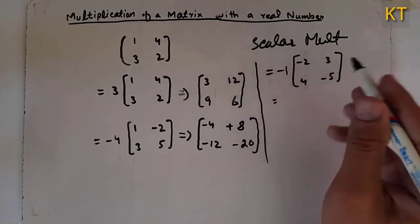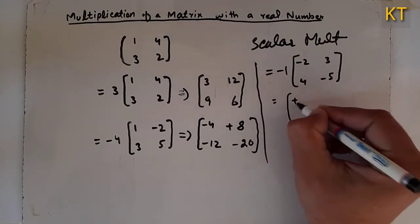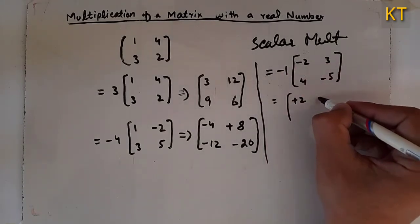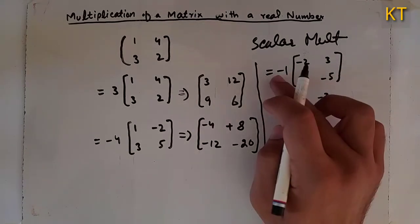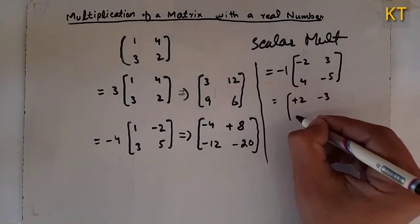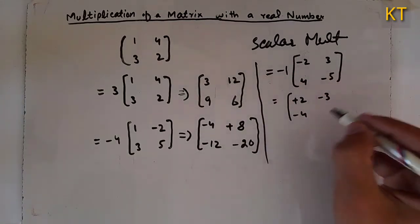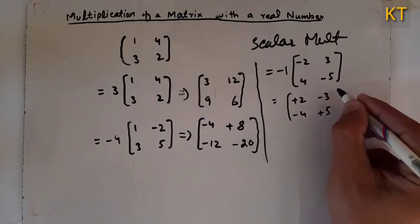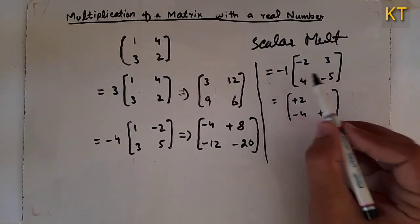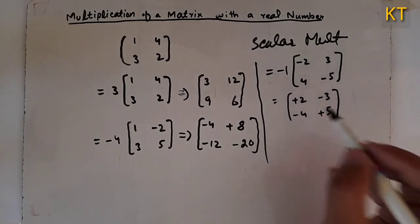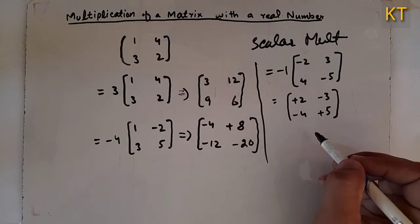Plus two times minus one gives plus three. Multiply to get minus three. Minus one times plus four gives minus four. Minus one times minus five gives plus five. When minus one multiplies the matrix, the matrix elements change sign.